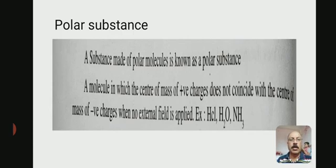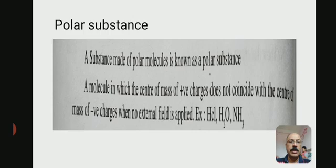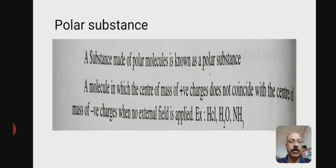First we see about polar substances. A substance made of polar molecules is known as a polar substance. That is, a molecule in which the center of mass of positive charge does not coincide with the center of mass of negative charges when no external field is applied. The center of mass of positive charges and the center of negative charges do not coincide.